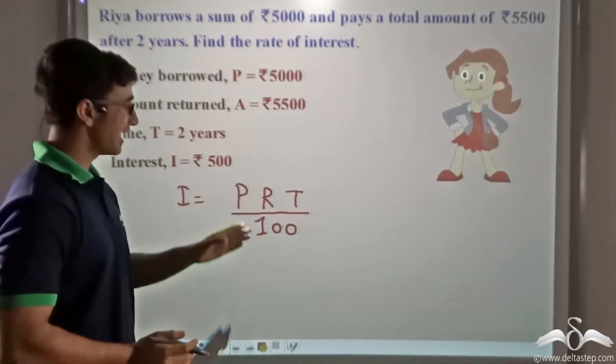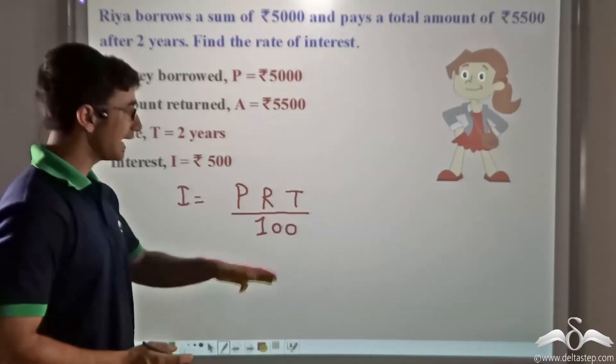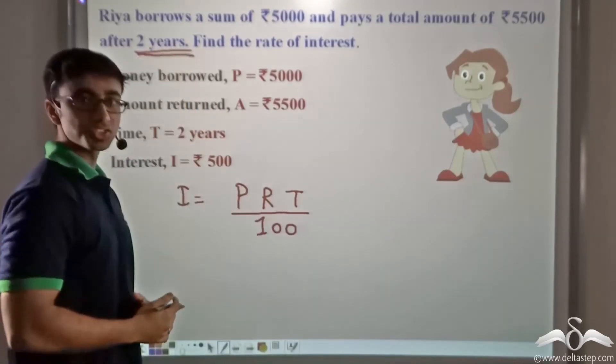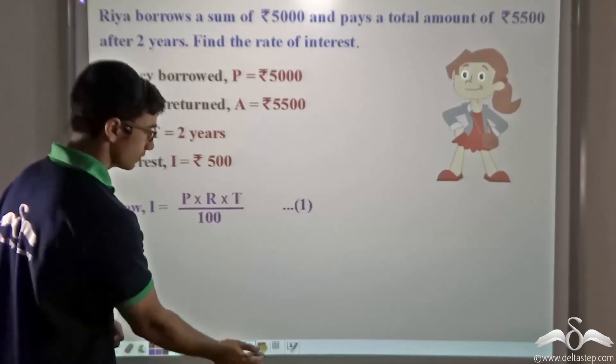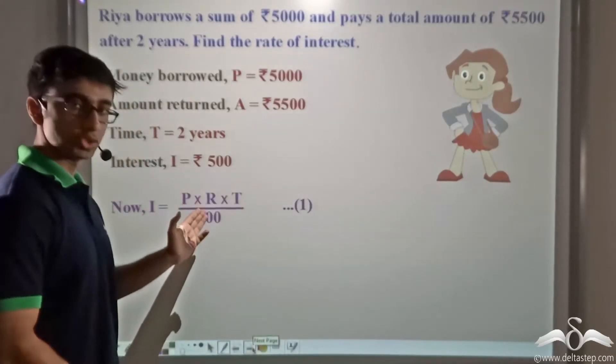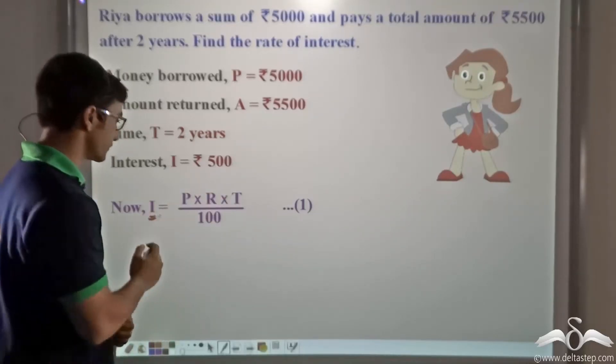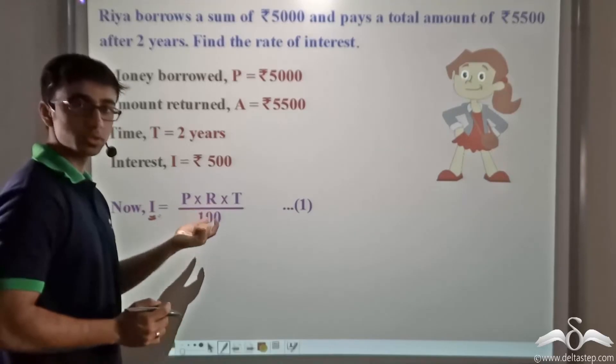Where P is the principal, R is the rate of interest, and T is the time for which the amount of money is being borrowed. So now we simply substitute the values for P and T as well as I, because we need to find out the value of R.